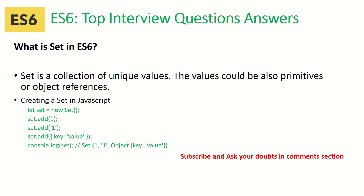The next question is: what is Set in ES6? Set is a collection of unique values. The values could be primitives or object references. To create a new set, we use let set equal to new Set(). Then we add values using set.add(). Basically, we can collect anything in it. So Set is simply a collection of unique values.